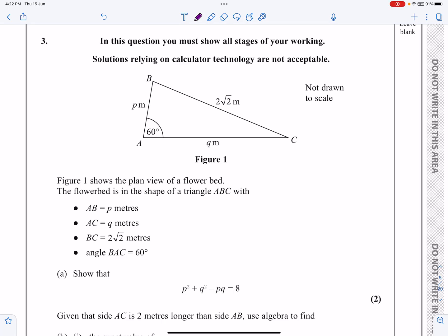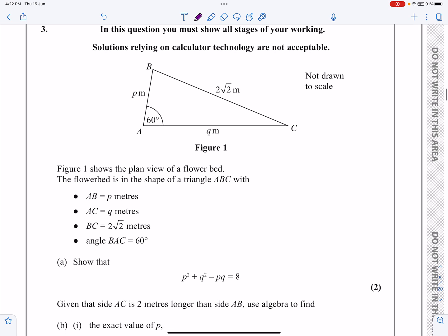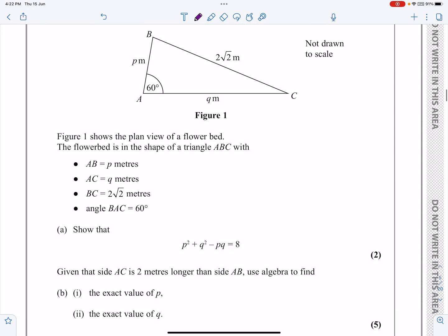This is the P1 paper from June 2021, question number three. It's a question on trig ratios and by the looks of things there's going to be some quadratics a little bit later on. Let's have a look. Figure one shows the plan view of a flower bed, a triangle ABC, and everything given over here is also written on the diagram.